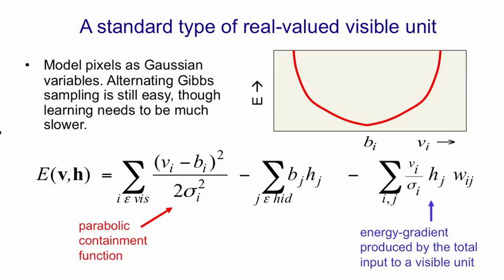It's the sum over all j of hj times wij divided by sigma i. So that term with its constant gradient looks like this. When you add together that top-down contribution to the energy and the parabolic containment function, you get a parabolic function, but with the mean shifted away from bi. How much it shifted depends on the slope of that blue line. So the effect of the hidden units is just to push the mean to one side.